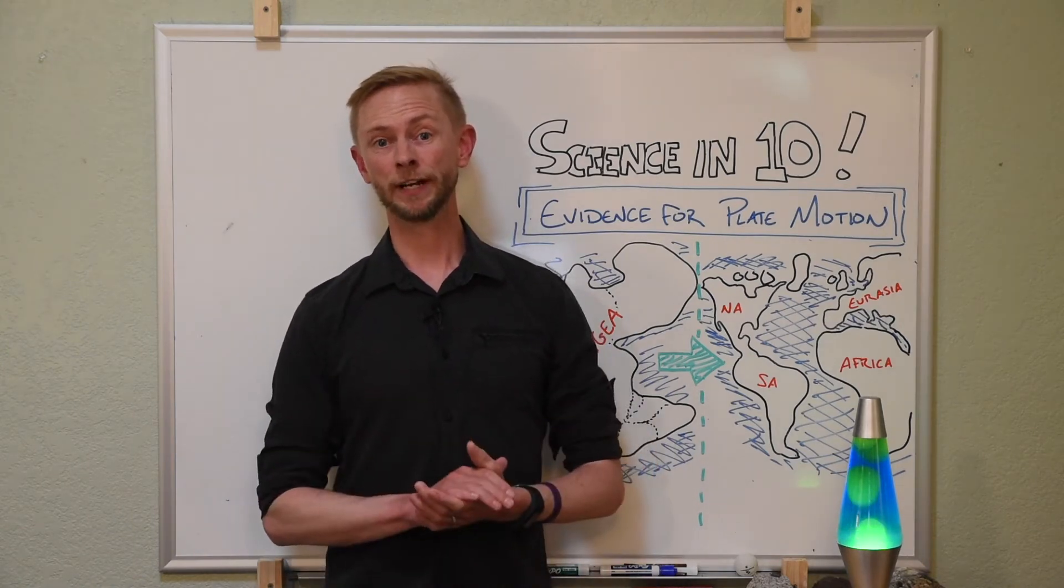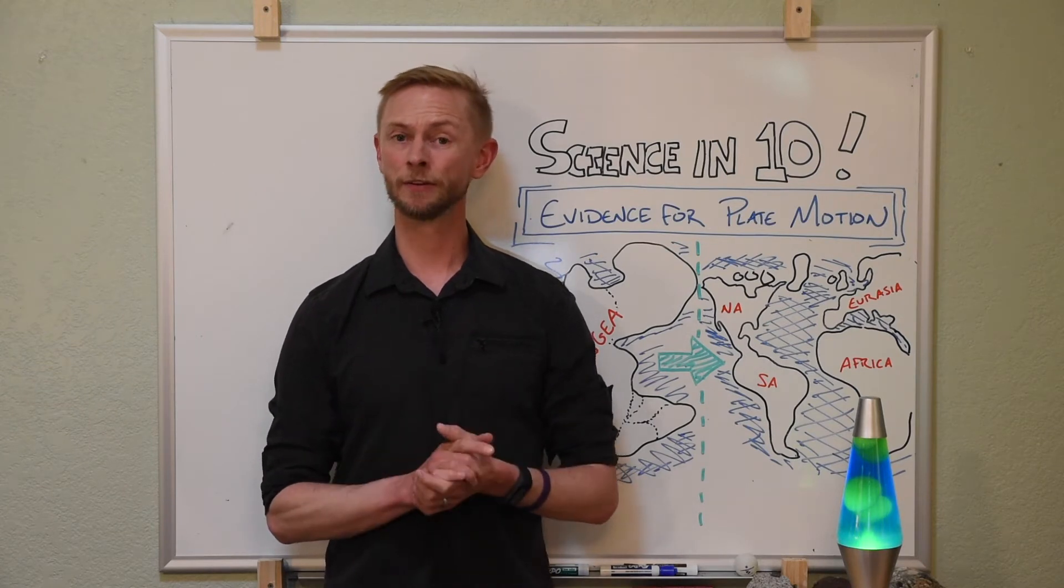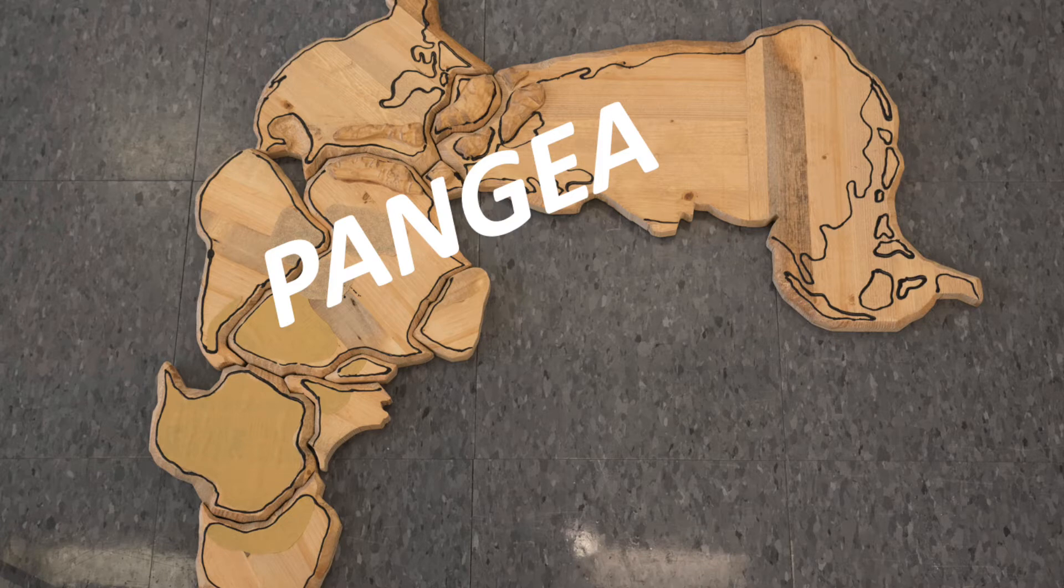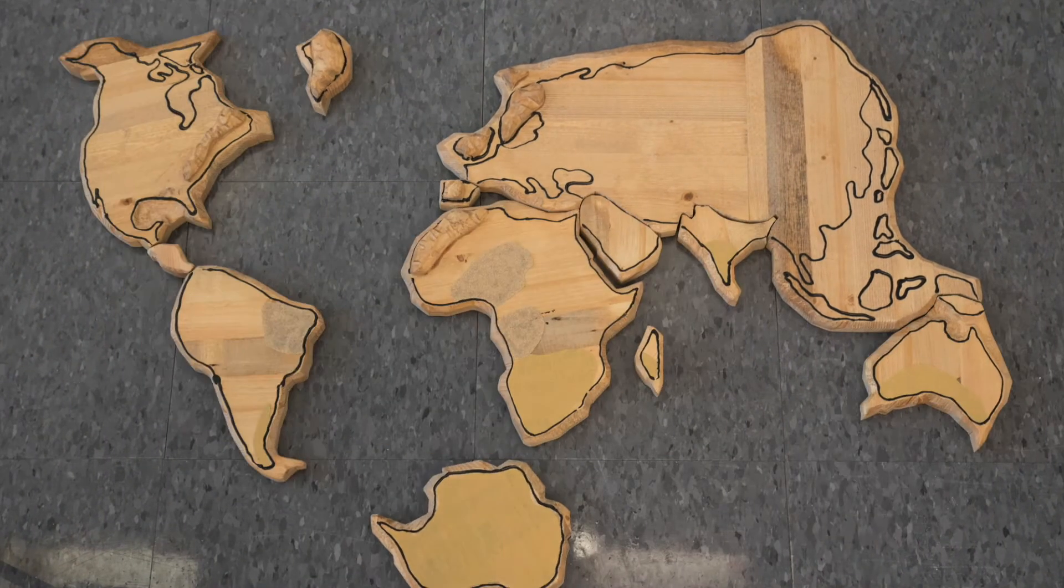A main part of Wegener's idea was his evidence that all the modern continents were once joined together into a single supercontinent, Pangaea. Over time, Pangaea broke up and the continents drifted to their current configuration.